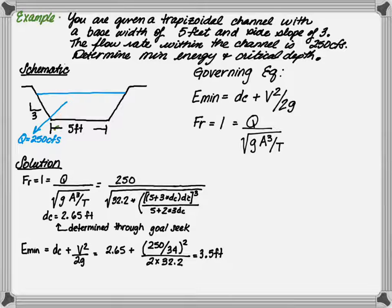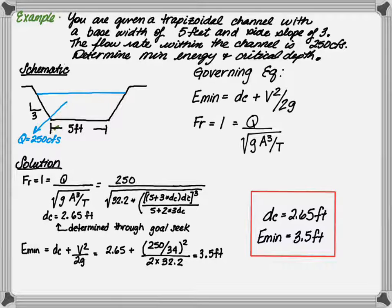By plugging this in to the specific energy equation and determining the velocity of this channel, we determine that the specific energy is 3.5 feet. This is the minimum energy of the channel.